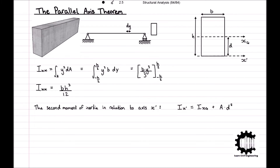From this, we can make a couple of observations: that the area A is always positive, and d squared will also always be positive. So we can conclude that for any region, the second moment of inertia relative to the centroidal axis will always be smaller than the second moment of inertia relative to a different parallel axis, because Ix-prime will increase as d increases.